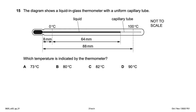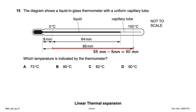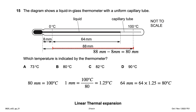A liquid-in-glass thermometer has a uniform capillary tube. At 0°C the liquid is at 38 mm, at 100°C it's at 88 mm. The range is 80 mm for 100°C, so 1 mm = 1.25°C. The reading is at 64 mm from the 0°C mark: 64 × 1.25 = 80°C.